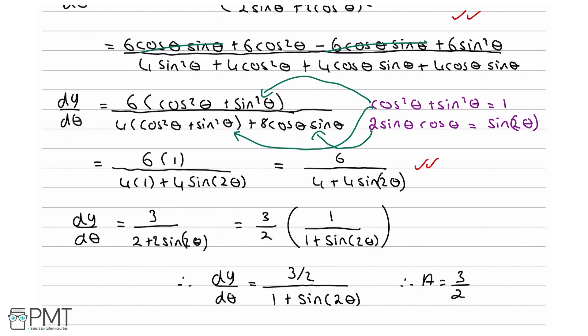Your fifth and final mark comes from taking the answer to the final form: dy/dθ = (3/2)/(1 + sin 2θ). The mark scheme says a fully correct proof with a = 3/2 stated is required. Some mark schemes require you to explicitly state a = 3/2, so definitely write it — you don't lose anything and it takes no effort.